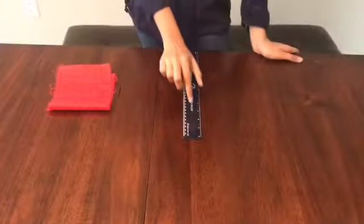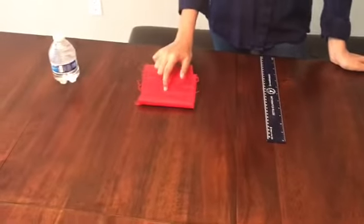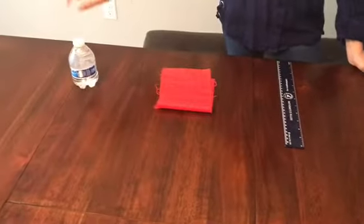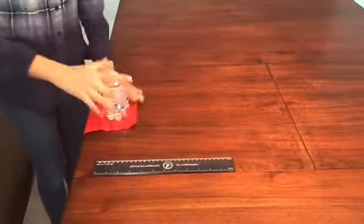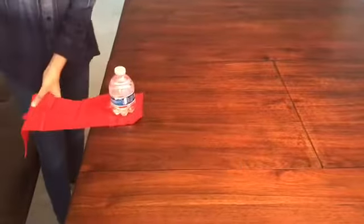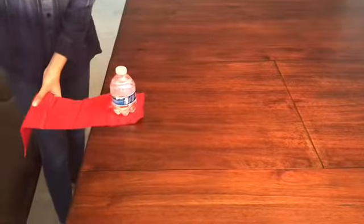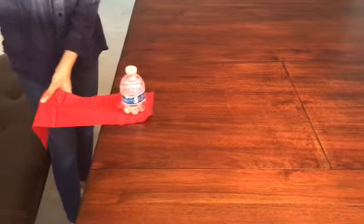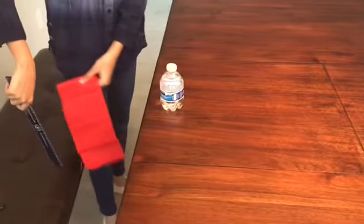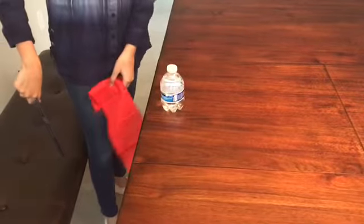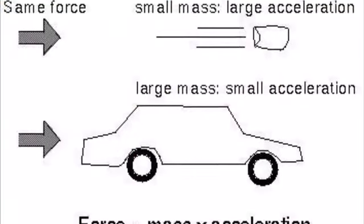For the next experiment, we need a ruler, a piece of cloth, and a water bottle. Place the bottle on top of the cloth and hit the cloth with the ruler. As you can see, the water bottle did not move. This is because I applied force on the cloth and not on the bottle.